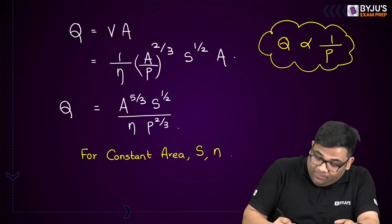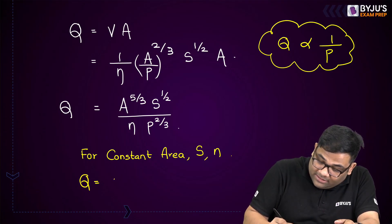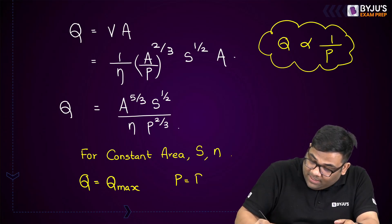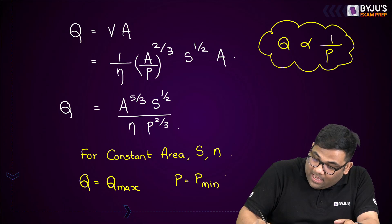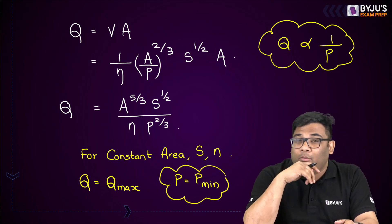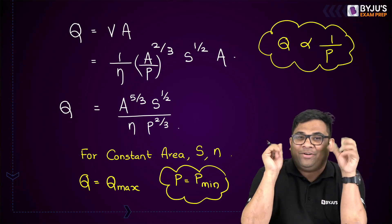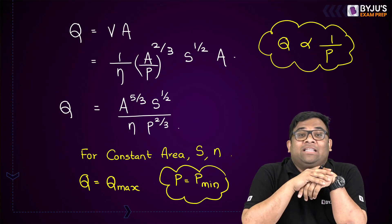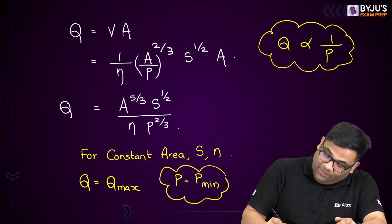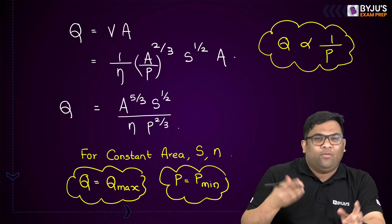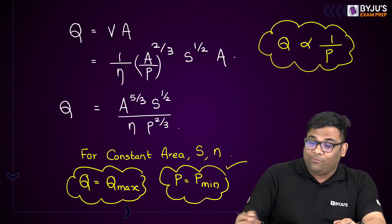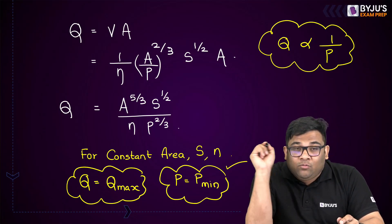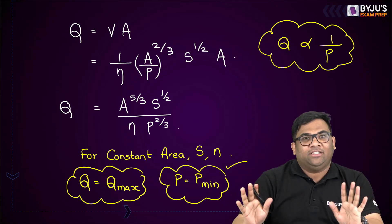That means if I want to maximize my discharge, I have to minimize my wetted perimeter. So if I want to maximize the discharge or the flow, I have to minimize my wetted perimeter. This is the concept of the hydraulic efficient section.